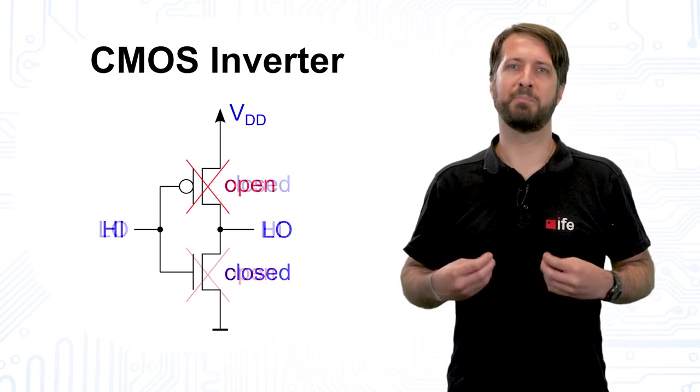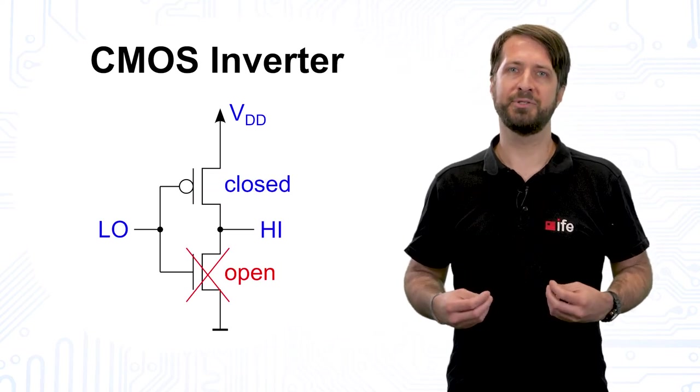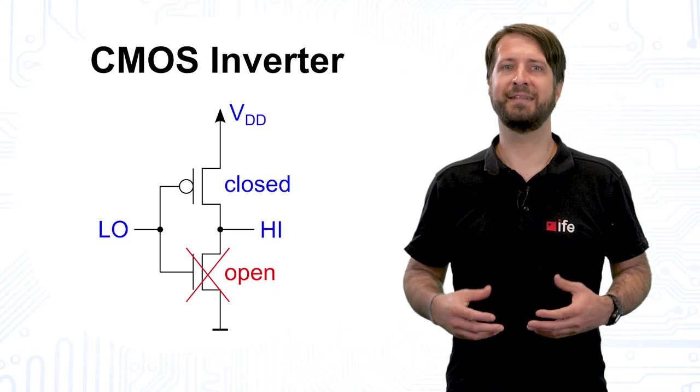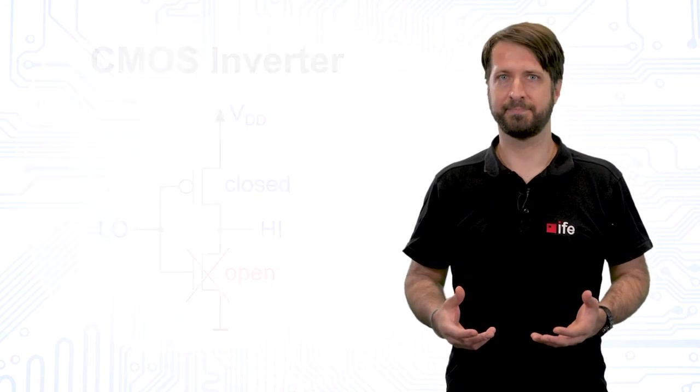Vice versa, by applying low level at the input, the PMOS closes and the NMOS opens. So in the static case, only one transistor is on at a time, providing a very low impedance, while the other one is off, providing a very high impedance.